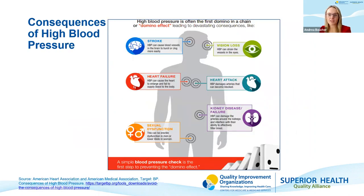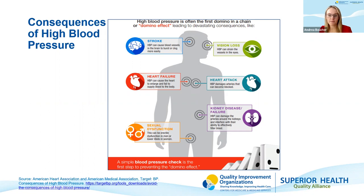This slide highlights some consequences of high blood pressure on the body, especially if left untreated. Stroke — high blood pressure can cause vessels in the brain to either burst or clog. It can also lead to vision loss due to strain on vessels in the eyes, heart failure where the heart enlarges and fails to supply blood to the rest of the body, heart attacks and arterial blockages, kidney disease or damage to arteries around the kidneys, and sexual dysfunction in both men and women. Blood pressure checks are that first step in identifying patients with high blood pressure to avoid these potentially deadly consequences.